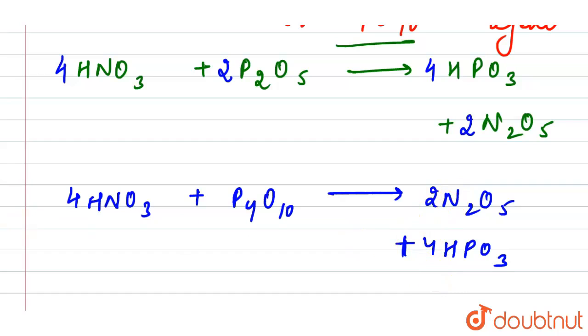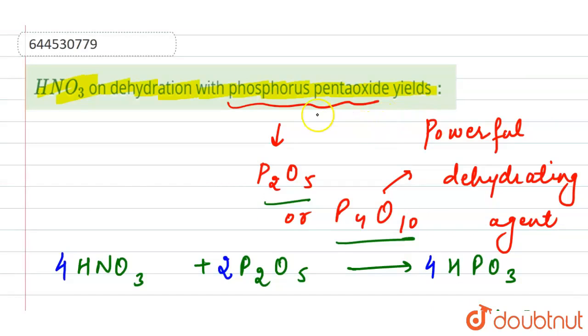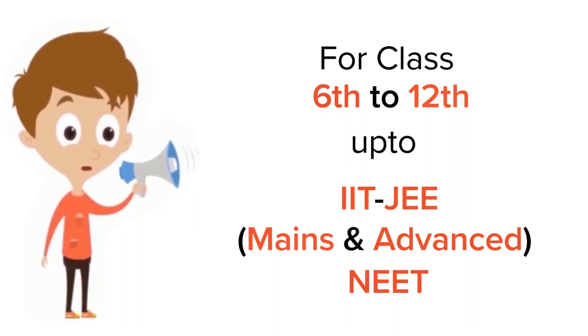So here it means that we have the formation of N2O5 and HPO3. So in the question we have been asked what does it yield. So here our answer will be N2O5 and HPO3. So this is our required answer. Thank you.